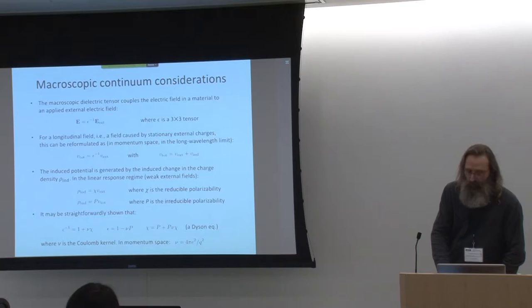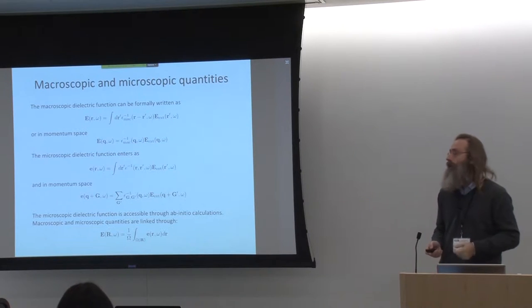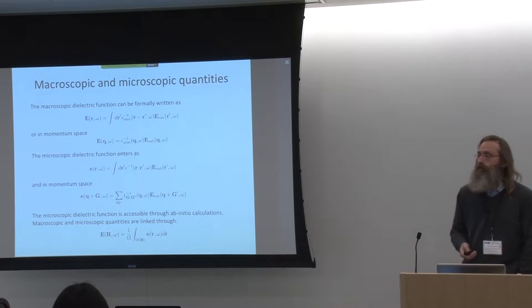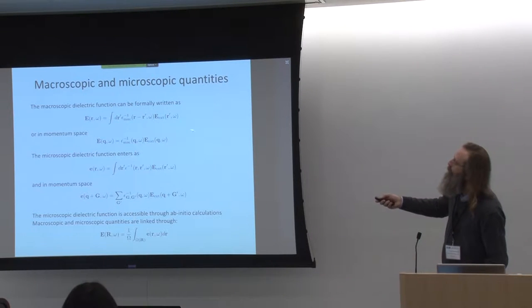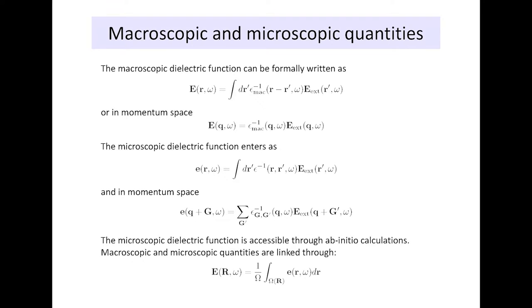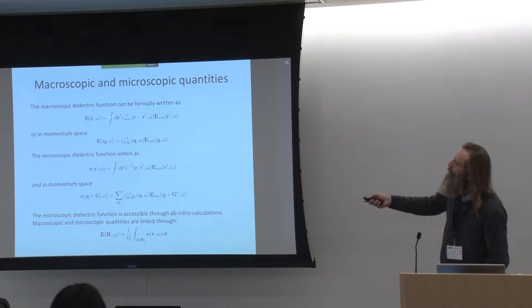That macroscopic description needs a connection to microscopic quantities because in codes like ours, we don't deal with macroscopic quantities — we deal with microscopic quantities. There are a whole bunch of indices that come into play. We have a field with a dependency on position: an externally applied field and a frequency. We have a tensor that depends on the distance between two points. The macroscopic tensor depends only on the distance, and if we have only a difference in coordinates we can Fourier transform into momentum space using one coordinate, ending up with a relationship for macroscopic quantities where a microscopic dielectric function enters.